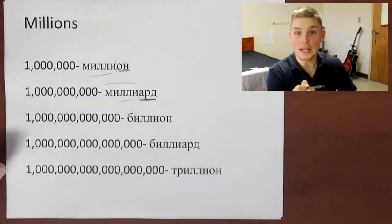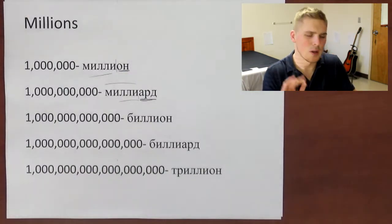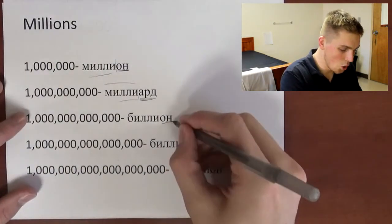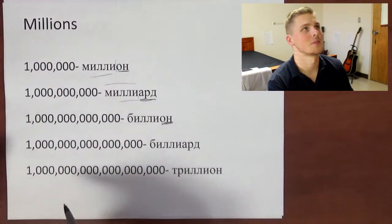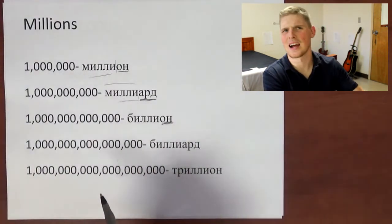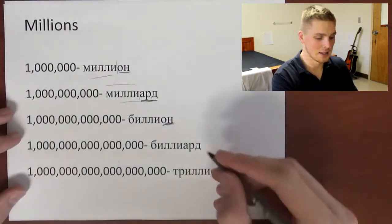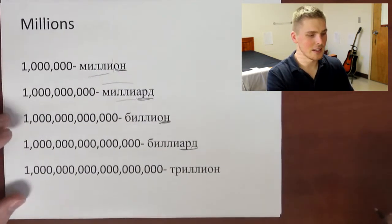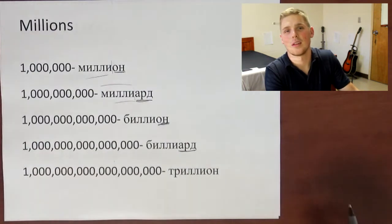Then one trillion is going to be биллион. Биллион, I know it might be a little confusing, but that's how we use it, so it's 'он' at the end. Then one quadrillion, I think, it's going to be биллиард. Биллиард, ending in 'ард'. And then finally quintillion is going to be триллион.